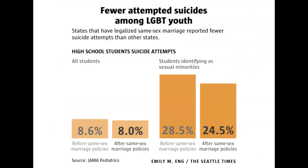We know that laws matter. A 2017 study looked at data from over 762,000 teenagers collected between 1999 and 2015. The researchers found that in any given state, whatever year same-sex marriage became legal, there was a drop in the adolescent suicide rate the following year, and this drop was accounted for almost entirely by LGBT individuals. These were high school students, so presumably they weren't planning on getting married right away — but just knowing that it was legal, having that official stamp of approval, was enough to make a difference.